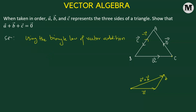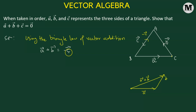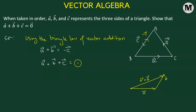Using the triangle law of vector addition, vector a added to vector b gives us the third side, which is the vector going from b to a — that means we get negative c. Transposing negative c to the left-hand side gives us vector a plus vector b plus vector c.